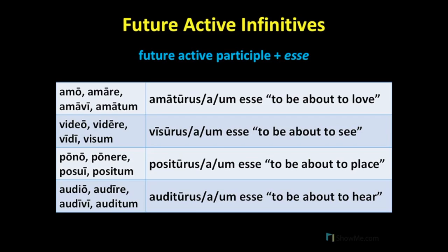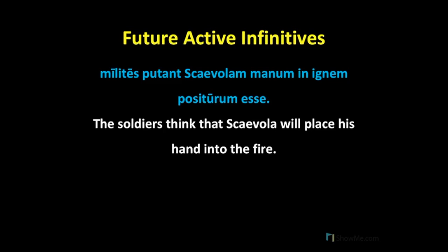Now, if you think that sounds clunky in English, well, I agree with you. But fortunately for us, the future active infinitive will most commonly occur in the indirect statement. So let's look at that example again: Milites putant Scaevolam manum in ignem positurum esse. Notice how we translated positurum esse as 'will place,' rather than 'to be about to place.' Remember that the future infinitive denotes an action that takes place later than the time of the introductory or main verb, and so most often you will construe the future active infinitive with the helpers 'will' or 'would.'